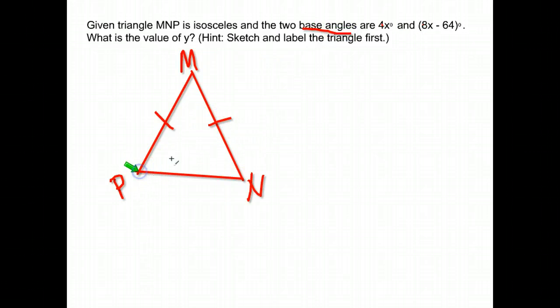The base angles are those angles across from the congruent sides, so this angle here could be 4x and this angle here could be 8x minus 64. What is the value of—this should say x right here.